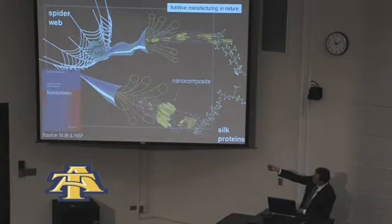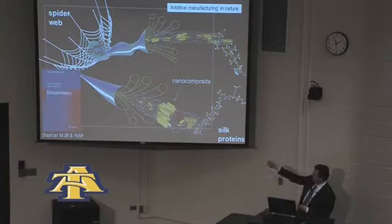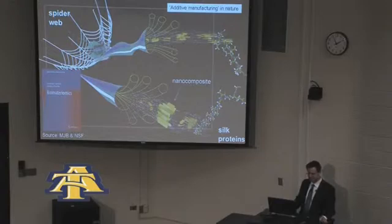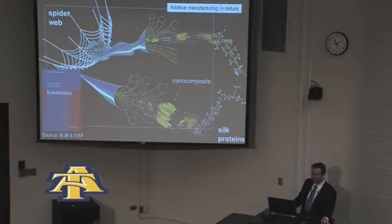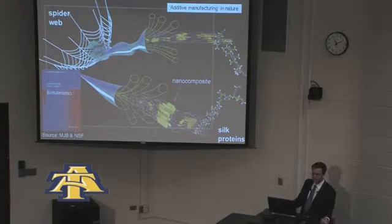The spider produces a material with the same strength as steel — actually much tougher than steel, because it's far more difficult to break silk. It makes this at room temperature, without a steel plant, without energy, simply by self-assembly. The key to achieving those extreme properties is a very articulate way of controlling structure at all different length scales. The spider controls how silk proteins combine, forming a nanostructure, then fibrils, then fibers, and eventually the web.